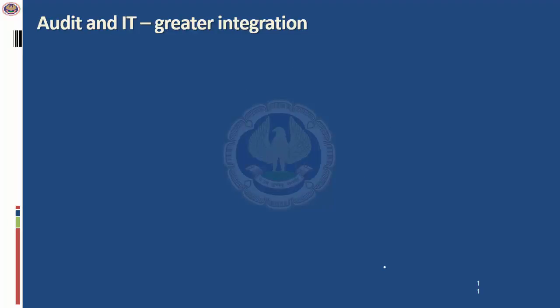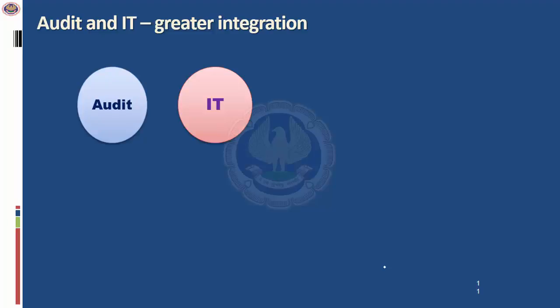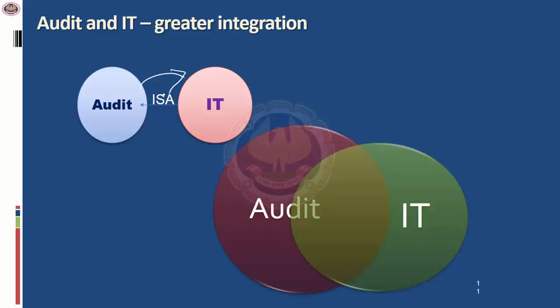If you look at the modern world compared to the past, audit has always been there and will continue. Information technology is imperative and all pervasive, so audit has to look at information technology. Earlier, the relationship between audit and IT was called information systems audit — meaning you audit information available in information technology. But now, in the modern age, audit and IT have become closely integrated, because most of what an auditor has to do is embedded inside information technology.